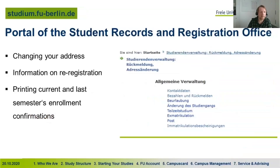Within this portal there's another portal — the Student Records and Registration Office portal. Everyone with an application number can already check the current status of their enrollment. After enrollment you can change your address, find re-registration information, and print current and last semester's enrollment confirmation certificates.